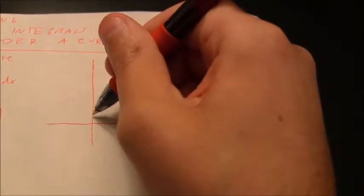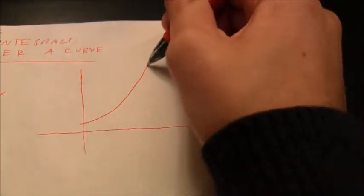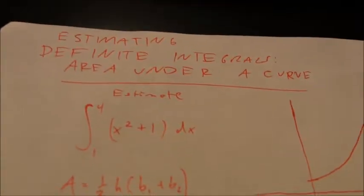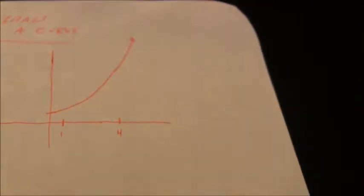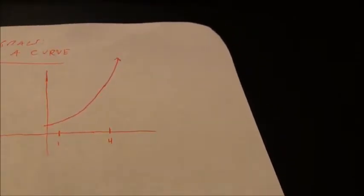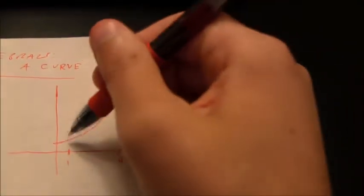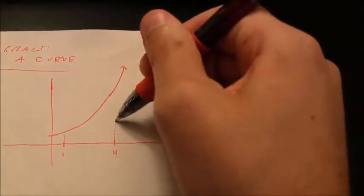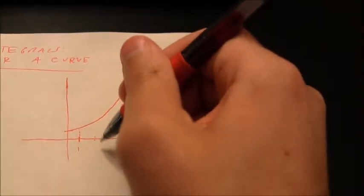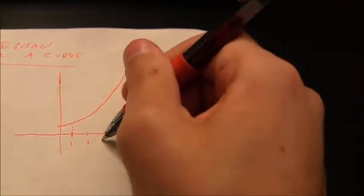x squared plus 1 is a parabola that's kind of raised up off the x-axis. The integral is between values of 1 and 4, so we're looking at a point at 1 and a point over at 4. Because there are 3 units between 1 and 4, we're going to use 3 trapezoids, with dividing points at 2 and 3.